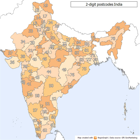Zone 5 — Telangana, Andhra Pradesh, Karnataka. Zone 6 — Tamil Nadu, Kerala, Puducherry, Lakshadweep. Zone 7 — West Bengal, Odisha, Arunachal Pradesh, Nagaland, Manipur, Mizoram, Tripura, Meghalaya, Andaman and Nicobar Islands, Assam, Sikkim. Zone 8 — Bihar, Jharkhand. Zone 9 — Army Post Office and Field Post Office.